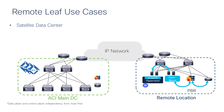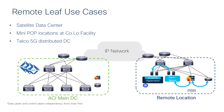This architecture enables a lot of use cases. For example, you may have use cases for a satellite data center, or a mini pop location, or a 5G distributed data center. In those use cases, the remote location is really small — you only need to put a pair of remote leaf switches over there. You can manage all those remote locations, multiples of them, from the main data center, and the APIC controller sitting in the main data center manages all of these remote locations.